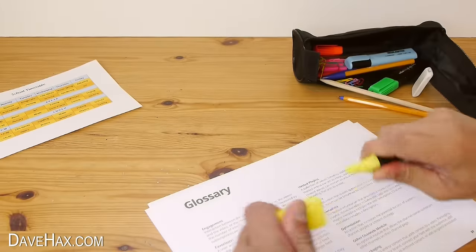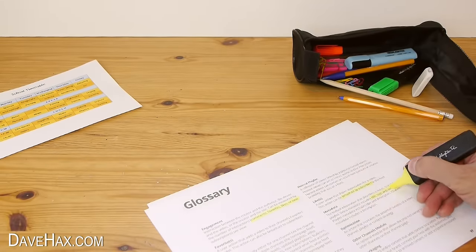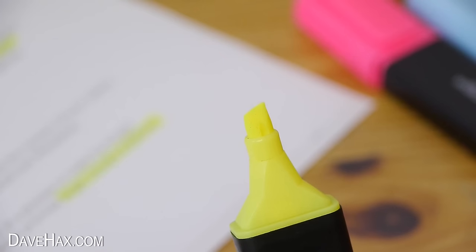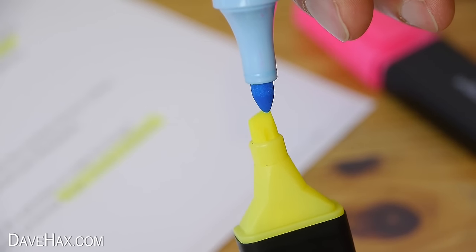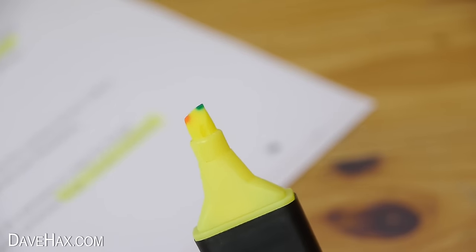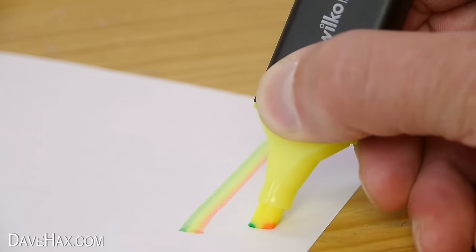If you like using a highlighter pen to pick out important bits of information on a document, you can customize your marker by touching the tips together from different colour pens like this. I'm using blue, yellow and pink to make my own rainbow highlighter. You can try different colour combinations and they're great fun to use.